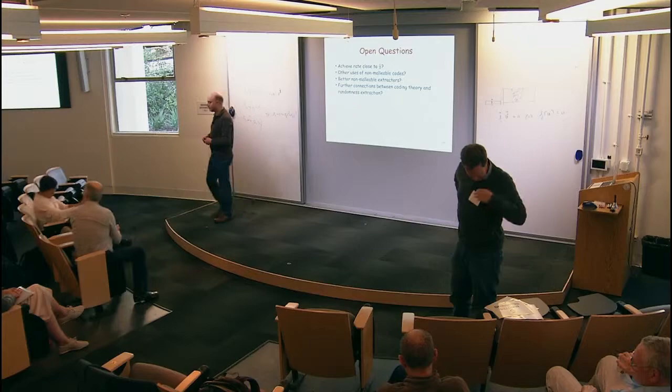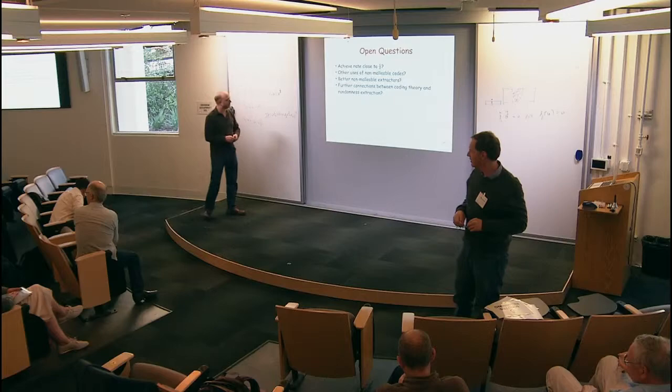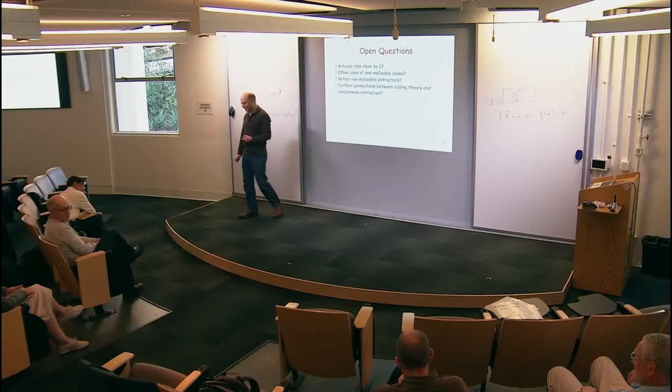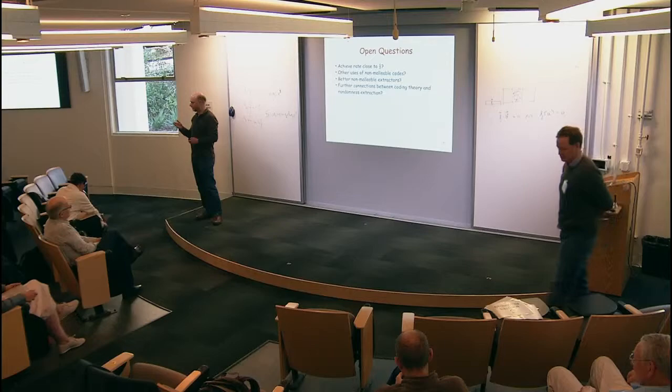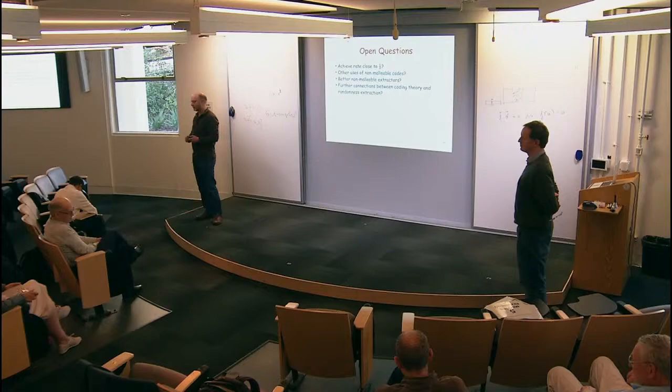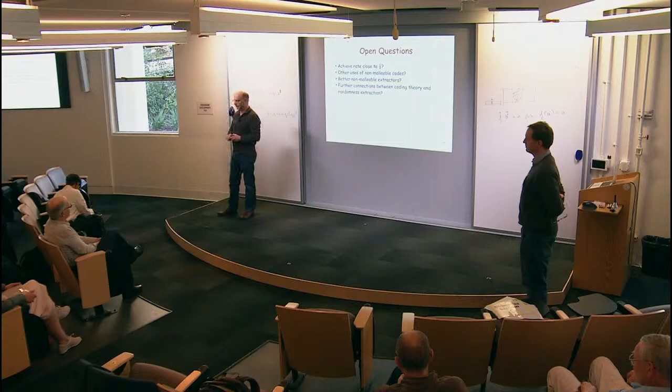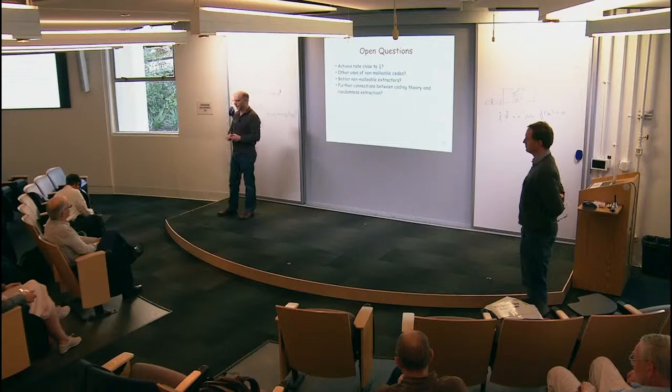Question: does your proof give you the Johnson bound for all distances in binary codes? If the distance is, say, 0.1 rather than 1/2 - epsilon? In the binary setting, you can choose epsilon freely — it works for anything, though you don't want to lose constants. The speaker believes it does match the standard Johnson bound.